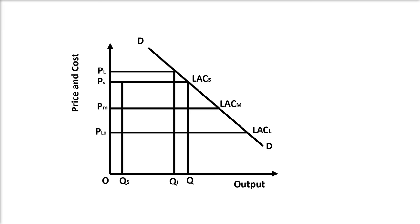Thus, the equilibrium price will not be higher than the entry-preventing price PL, and lower than PS would not prevent entry. Similarly, the equilibrium output cannot be larger than the entry-preventing output OQL, and any output smaller than this will not prevent entry. This is because the model assumes that established firms will produce the same output even after the entry of new firms. According to Sylos, there is no unique determinate solution, but the price tends to settle at a level immediately above the entry-preventing price of the least efficient firms. To conclude, in the Sylos Labini model, the equilibrium price tends to settle as the highest limit price set by the largest firm and acceptable to all established firms who earn the minimum normal profit. When costs change, the full cost principle acts as the rule of thumb in determining the equilibrium price.